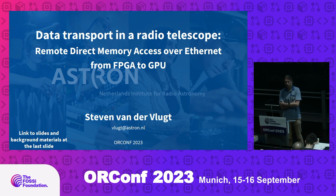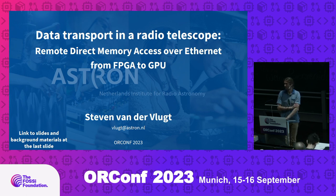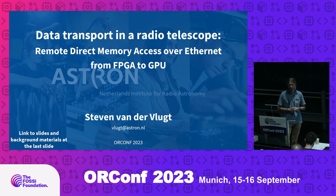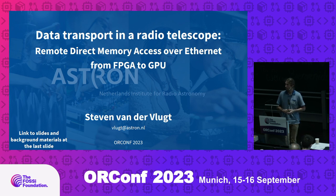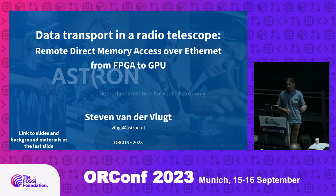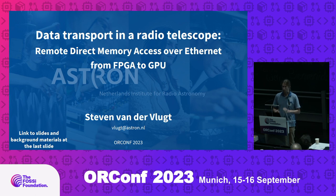ASTRON is a Dutch institute for radio astronomy. Today I would first like to explain what radio astronomy is and slowly take you down into the world of radio telescopes. In the end I will address one of our biggest problems, which is data transport from our front ends to our servers where we process the data. I have a QR code at the end which you can scan — it leads to a git page with references to everything including the presentation.